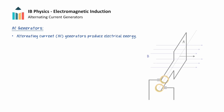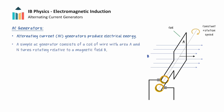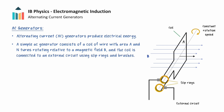An AC generator consists of a coiled wire, usually with a large number of turns, that is made to rotate in a magnetic field. This coil is also connected to an external circuit using slip rings and brushes.